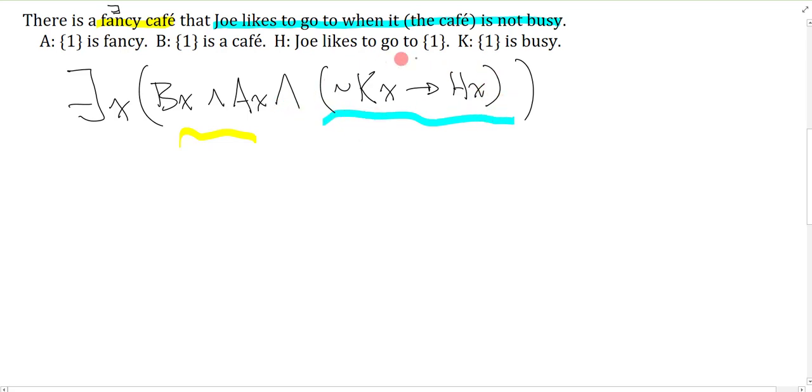This is the property. The only trick here is that you must have these brackets, otherwise the conditional would be the main connective. You could have started by bracketing BX and AX first, that's totally fine. You could have cut it up other ways. As long as you have a conjunction as the main connective to pair with the existential to make the canonical form, you're good to go.